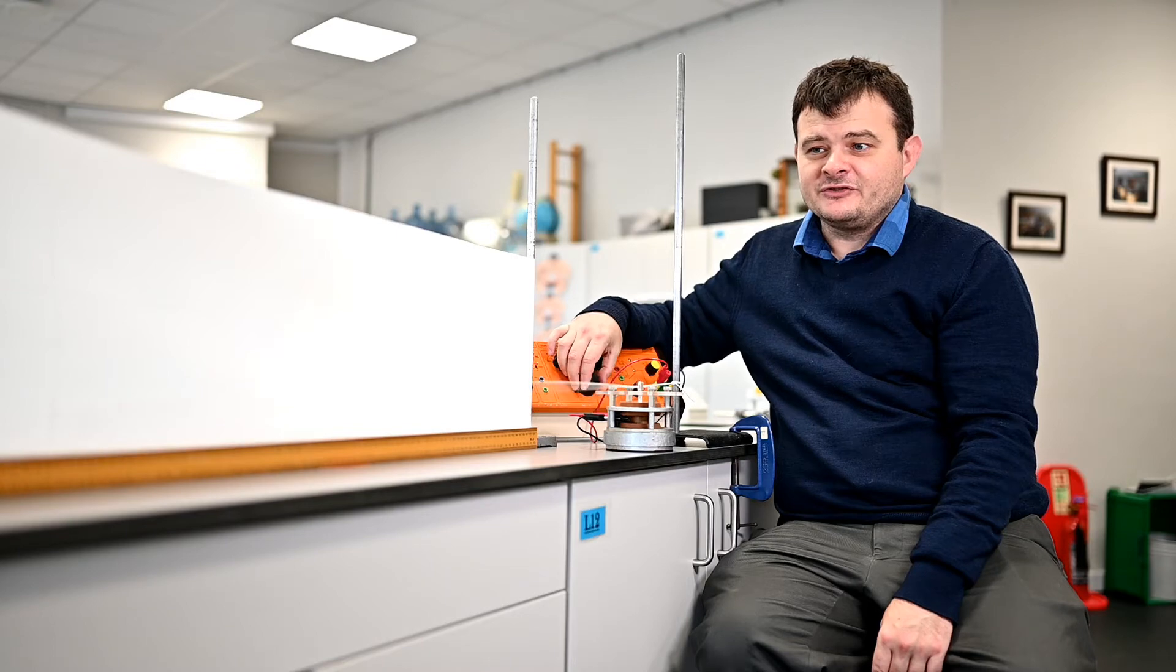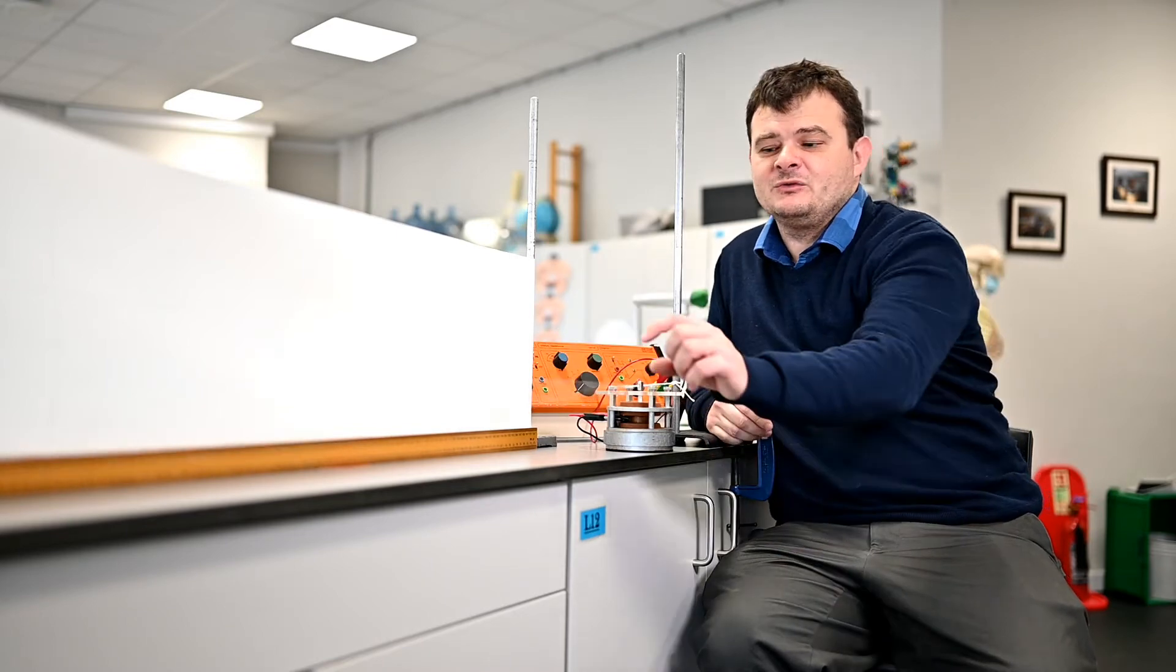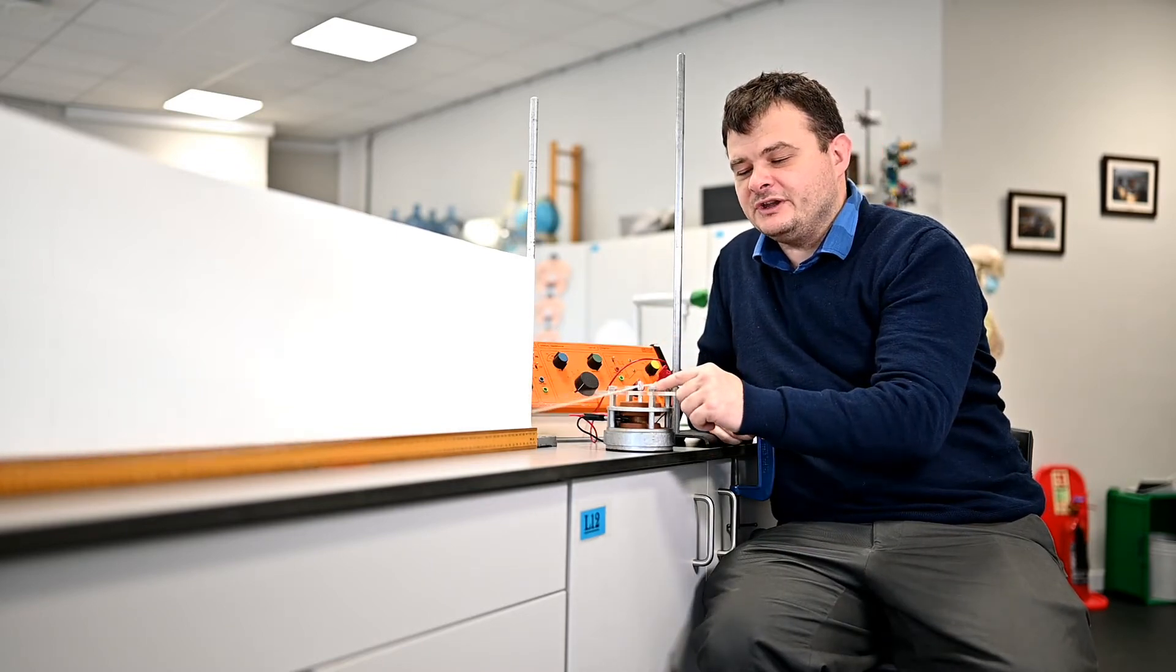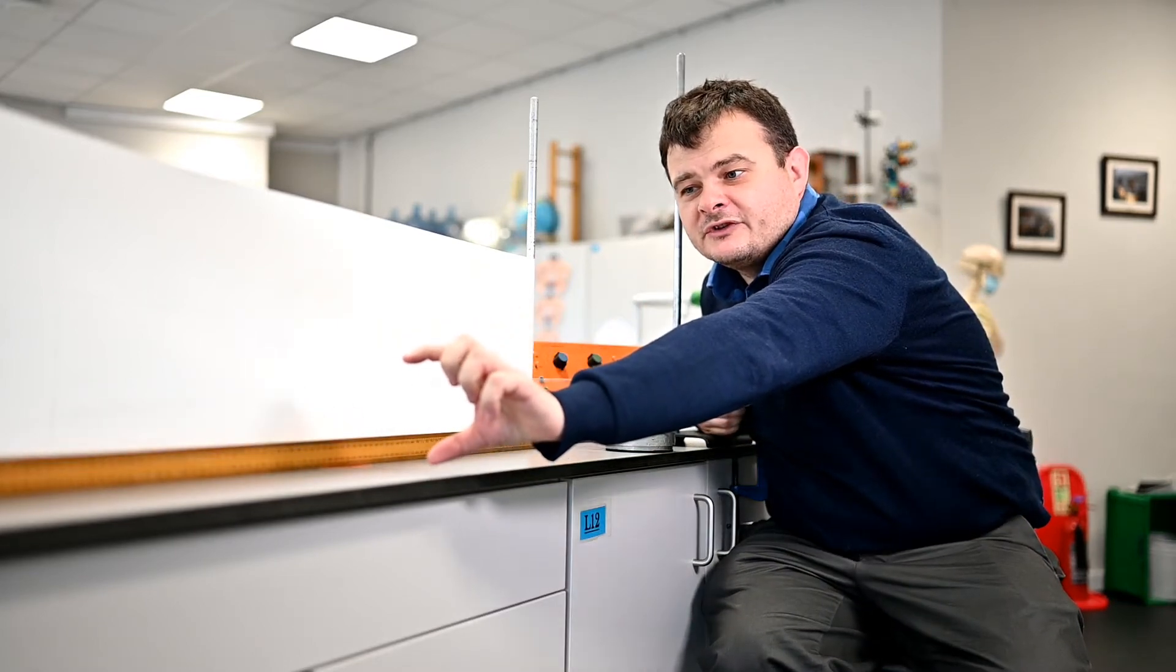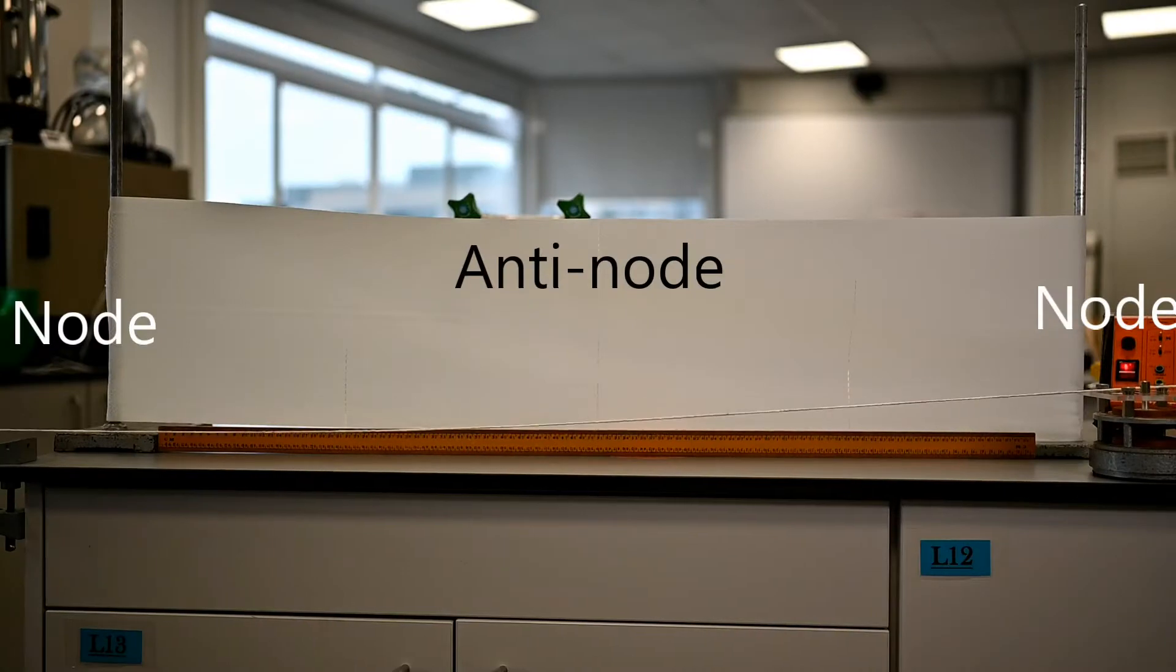So I can find the first standing wave by doing that. And the first standing wave is where we've got stationary points at either end of the string and a point in the middle where the string is vibrating a lot. We call these stationary points nodes, and in the middle it will be called an anti-node.